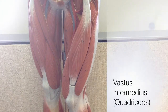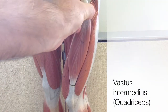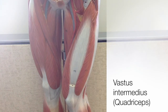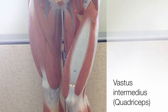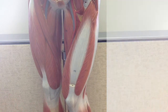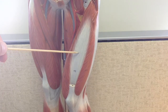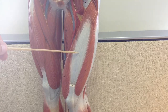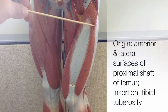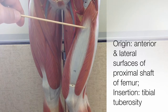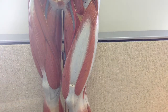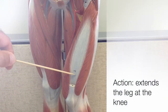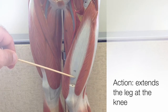To see the fourth and last of the quadricep muscles, we can remove the rectus femoris from the model and see the region of the vastus intermedius. Intermedius means it's in between both the vastus medialis and vastus lateralis. This is the smallest and deepest of the quadricep muscles, directly deep to the rectus femoris. Its origins are on the anterior and lateral surfaces of the proximal shaft of the femur, and it also inserts onto the tibial tuberosity. Like the vastus medialis and lateralis, the vastus intermedius extends the leg at the knee.